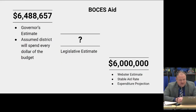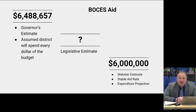BOCES aid: same concept — very early in the fall it's based on what BOCES says we're going to spend. We get fluctuations throughout the year. The legislature is 99.9 percent likely not to change the formula — no indication anything's changing. Our aid rate is stable here. Based on what I think we'll spend through June 30th and what that rate is, we're going to pull in about six million dollars of BOCES aid.